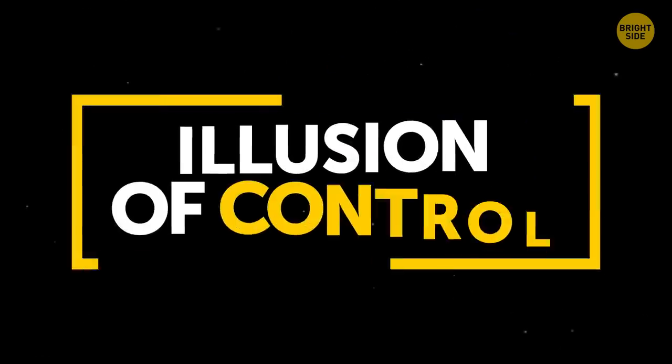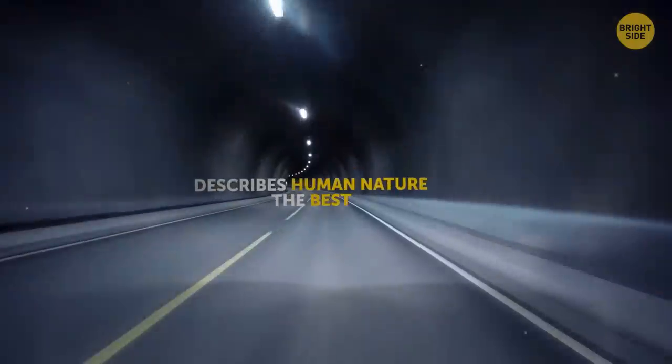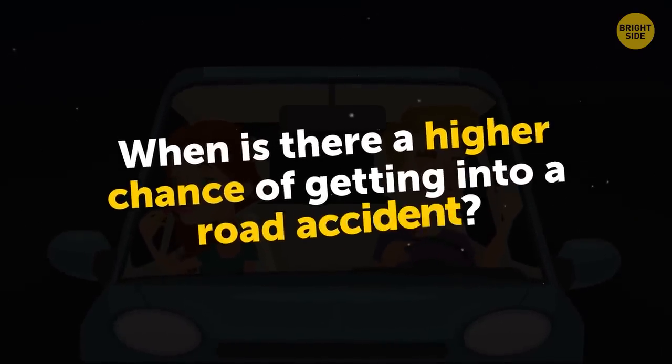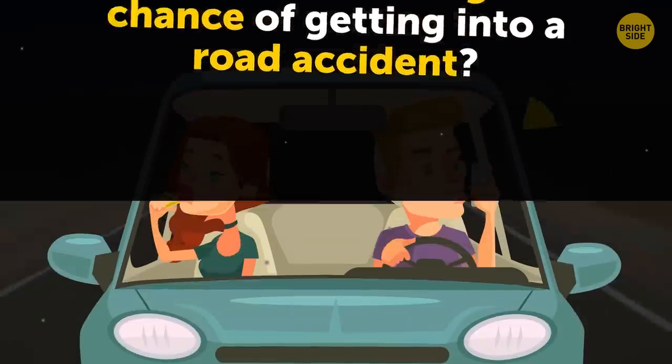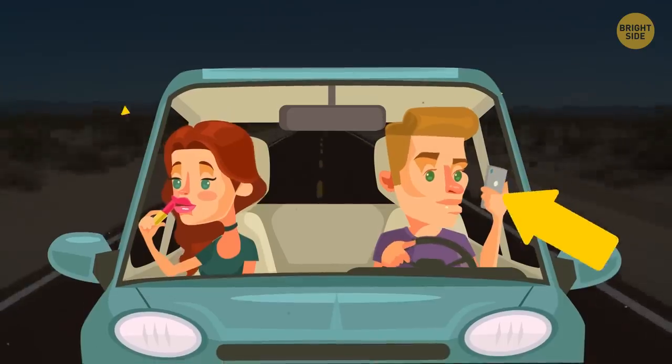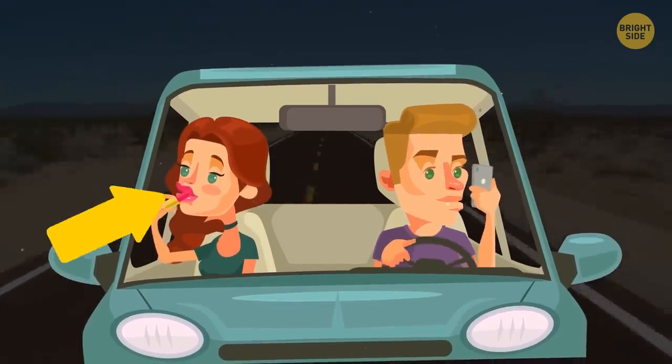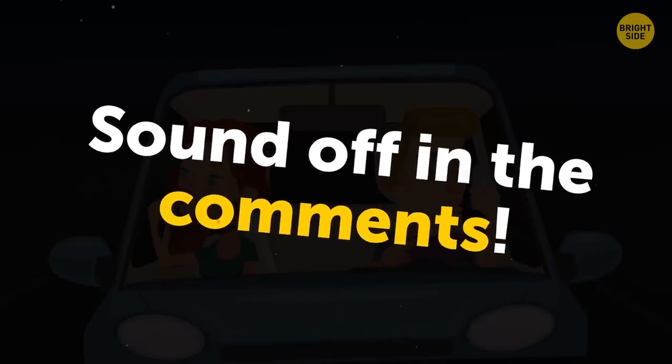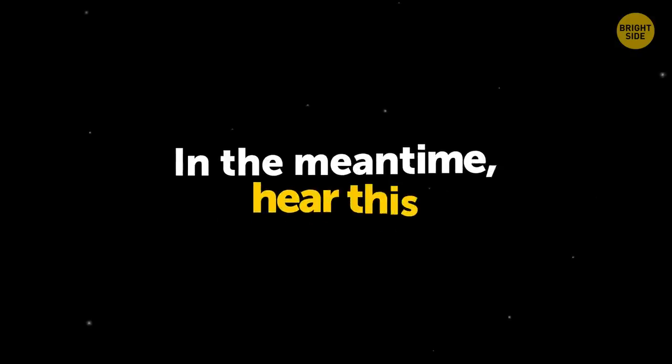Number 3. Illusion of control. This cognitive bias is probably one that describes human nature at best. So tell me first, when is there a higher chance of getting into a road accident? When you're driving a car? Or when someone else is at the wheel and you're just a passenger? Sound off in the comments. I'll tell you what the statisticians say about it in a minute.